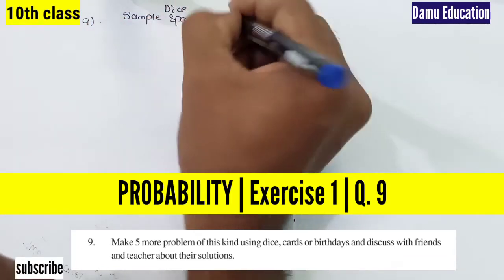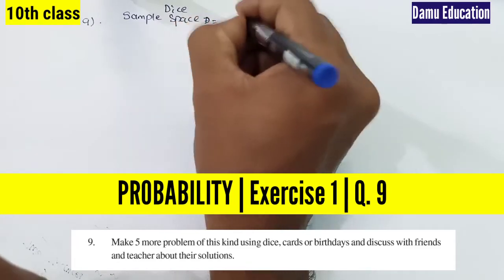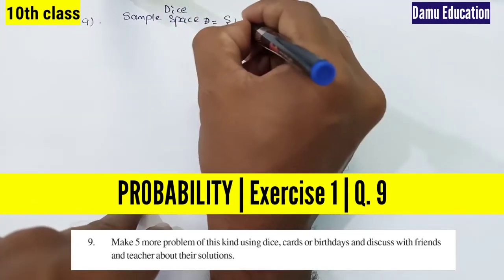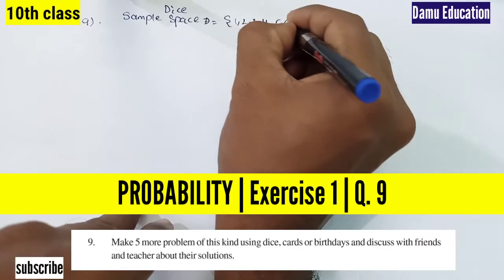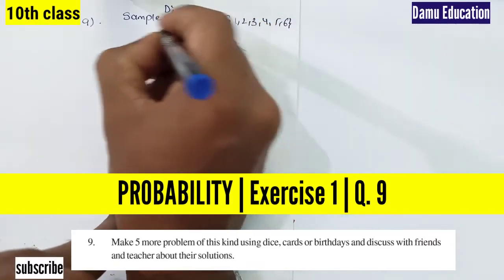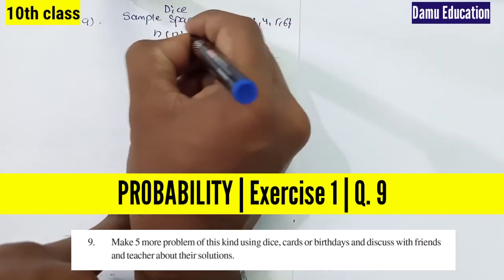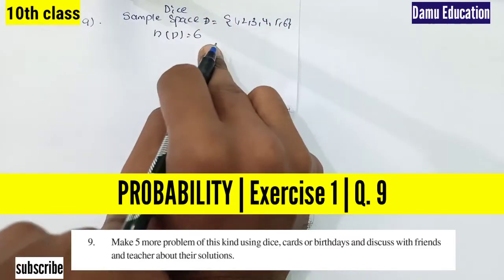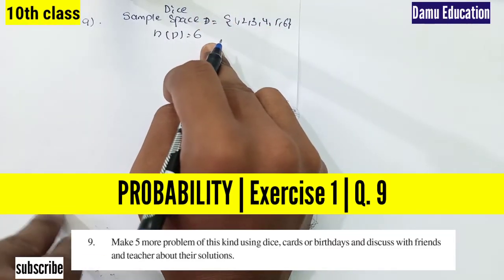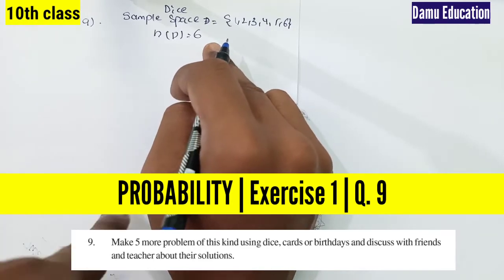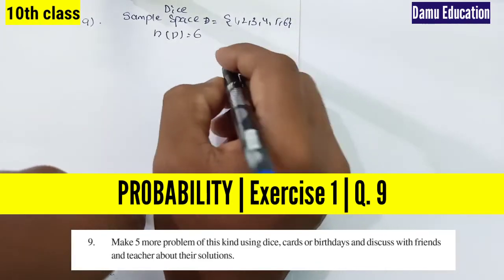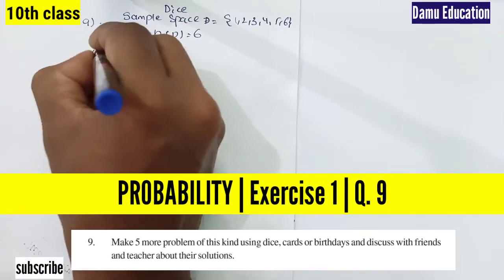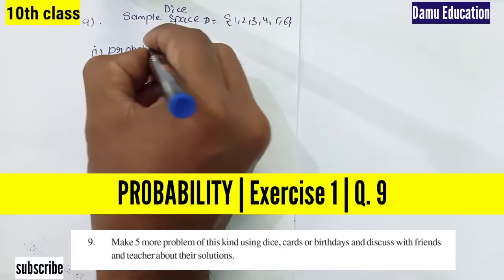The sample space D = {1, 2, 3, 4, 5, 6}. The total number of outcomes is 6. The first problem: what is the probability of getting a number less than five?